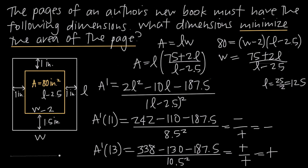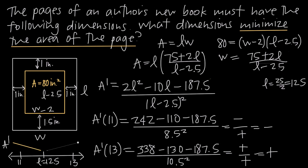On a number line, l equals 12.5 is in the middle. The test value of 11 produced a negative derivative, meaning the function is decreasing to the left of 12.5. The test value of 13 produced a positive derivative, meaning the function is increasing to the right of 12.5. Since the function goes from decreasing to increasing, we can confirm that l equals 12.5 is a minimum value.